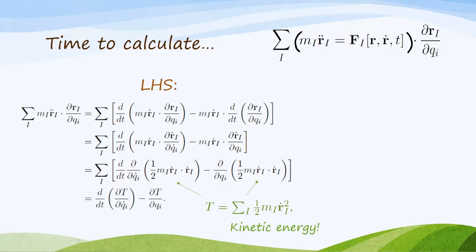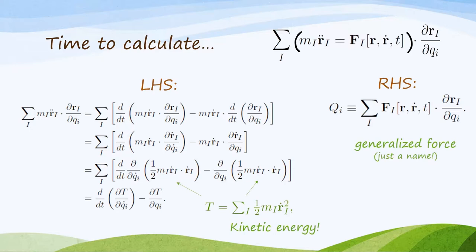What about the right-hand side? Well, there's not too much we can really do to that. We just give it a name. We say when we dot F into drdq and sum over capital I, that is the generalized force q sub little i associated with the i-th coordinate. Put it all together, and you get this very nice equation.